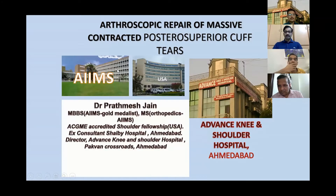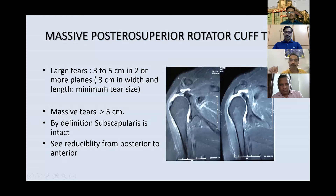I will be focusing my talk on massive contracted posterior superior cuff tear, which is a small subdivision in the rotator cuff. By definition, it means the subscapularis is intact. You can divide it into large and massive — large is around three to five centimeters and massive is more than five centimeters. In this particular subset of patients, we need to assess reducibility from posterior to anterior, which is very important.